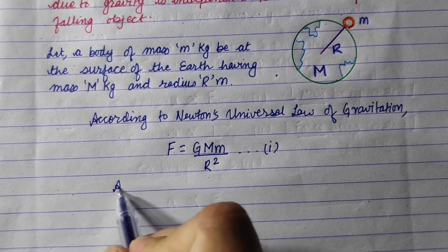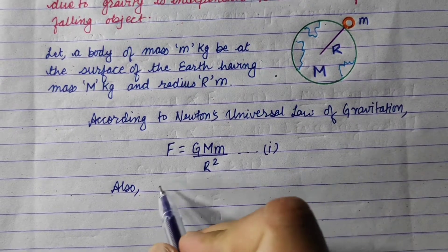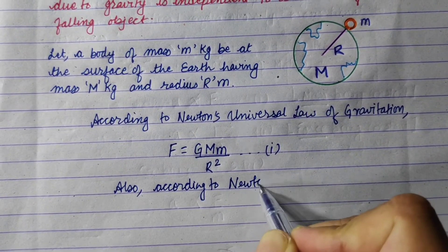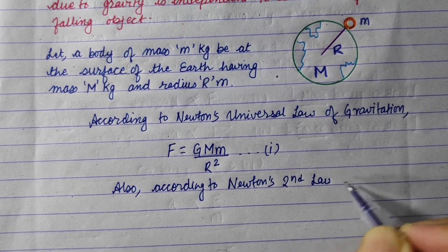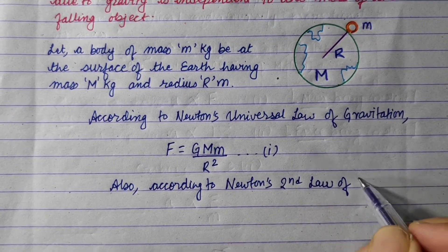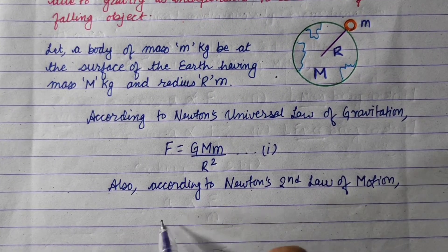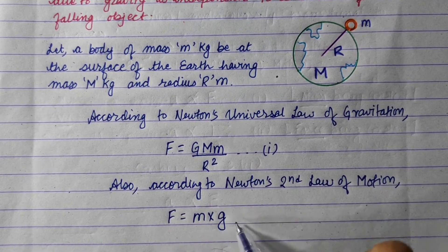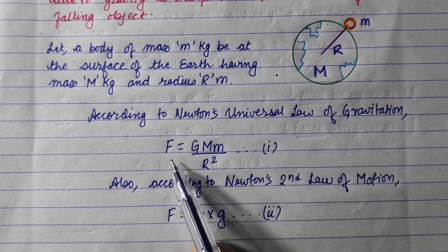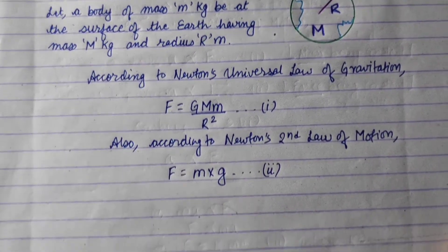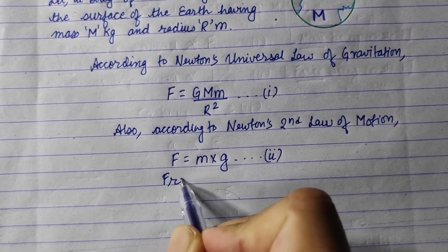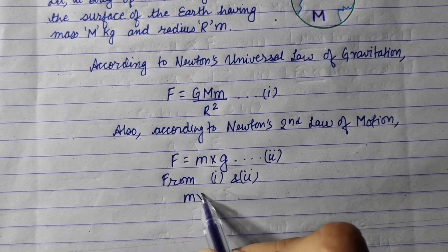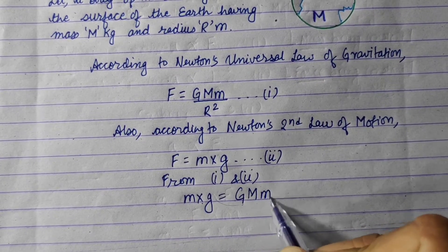This force is also the weight of the object. According to Newton's second law of motion, the force on the object is F equals mass times acceleration due to gravity, that is F equals m times g. Now we can equate equation 1 and equation 2: m times g equals capital G times capital M times small m upon r square.